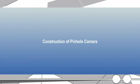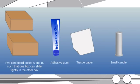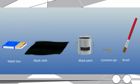Construction of pinhole camera. Materials required: Two cardboard boxes A and B, such that one box can slide tightly in the other box. Adhesive gum, tissue paper, small candle, match box, black cloth, black paint, common pin, and brush.